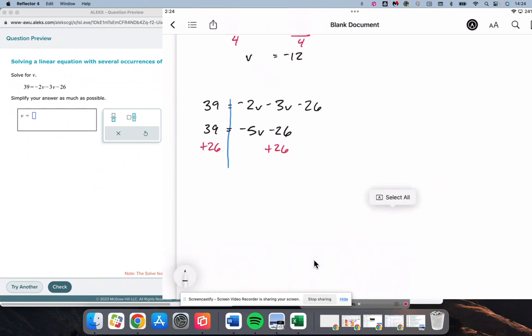On the left, that's going to give me 65. And the negative 26 plus 26 on the right is going to make 0, leaving me with negative 5v. We divide both sides by negative 5. And we get negative 13 is equal to v.